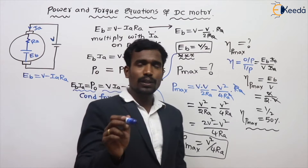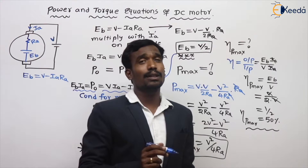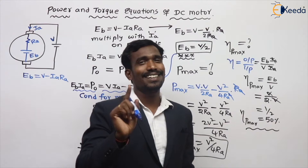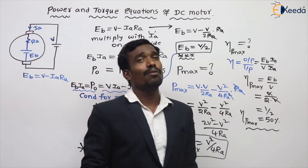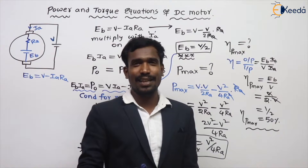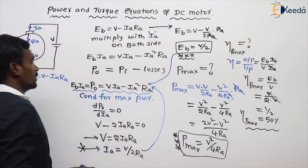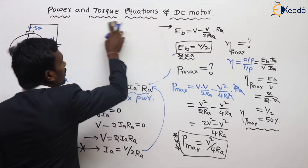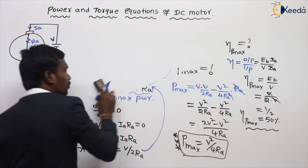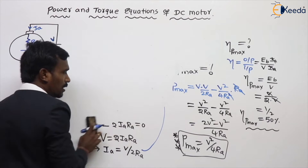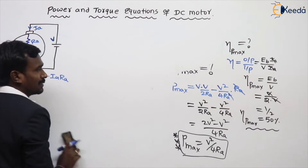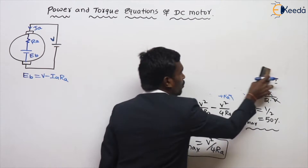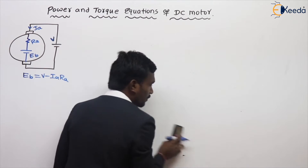But actually the power equation is P equals 2 pi N T by 60 — that is the actual mechanical power equation we need to derive. Some people don't know how to derive that formula, so let's derive it from the basics of physics.